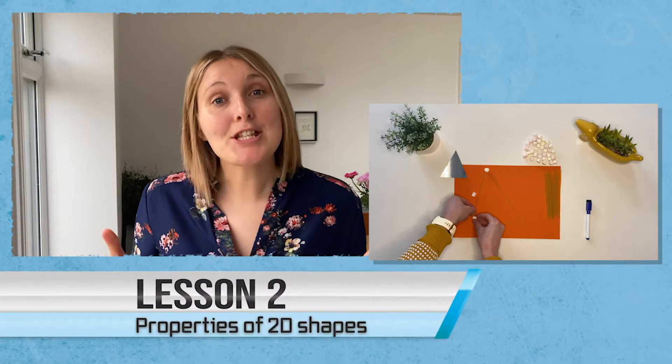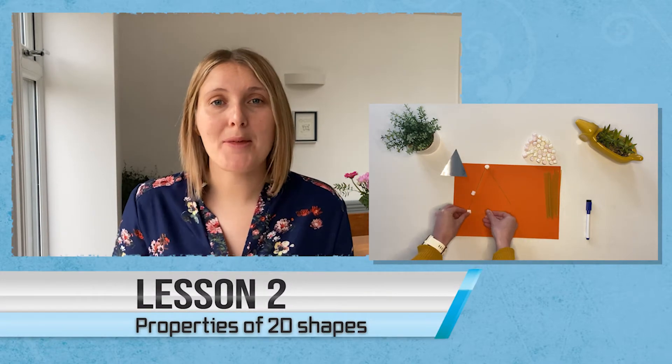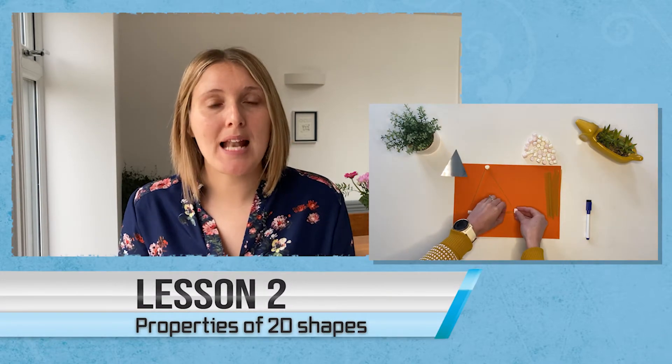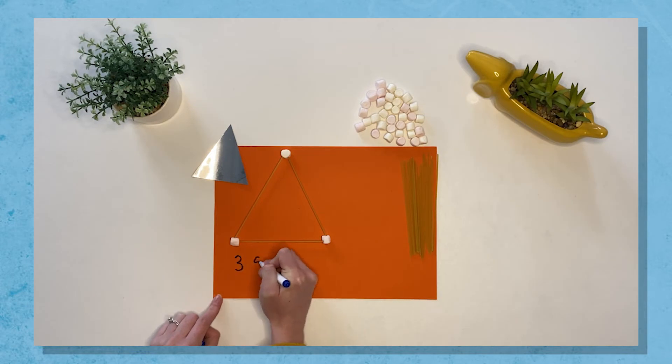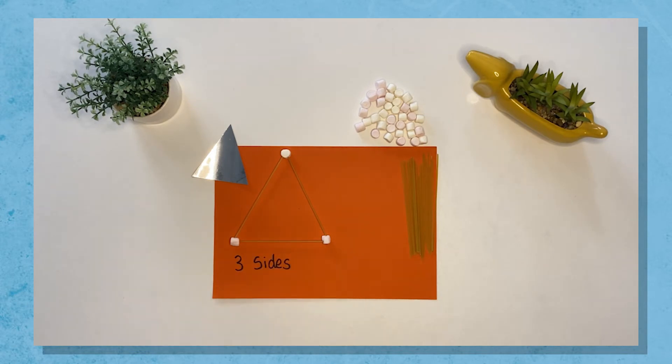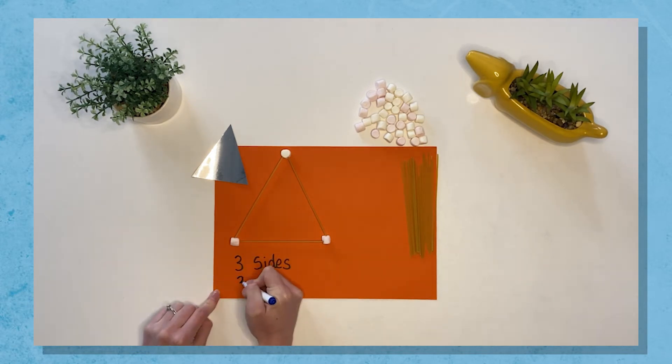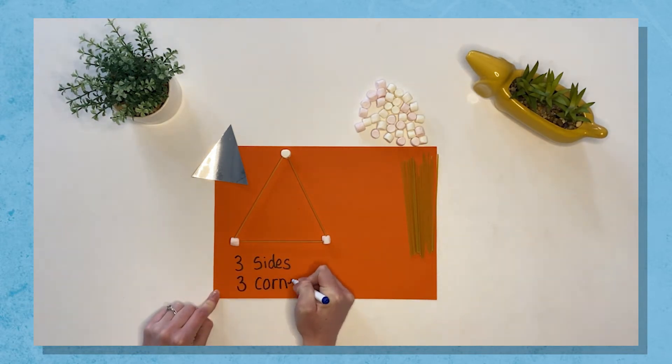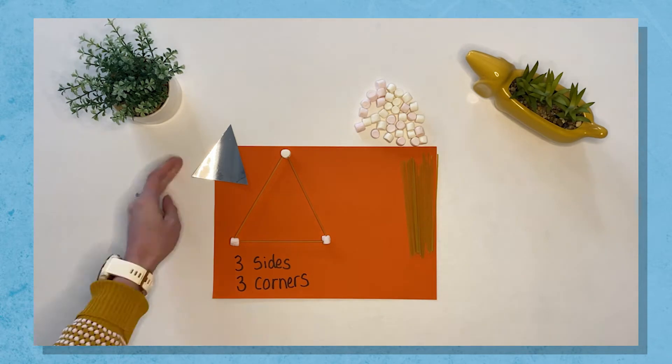Lesson two focuses more on the mathematical vocabulary of describing the 2D shapes. Now it's time to write down how many sides and how many corners your shape has.